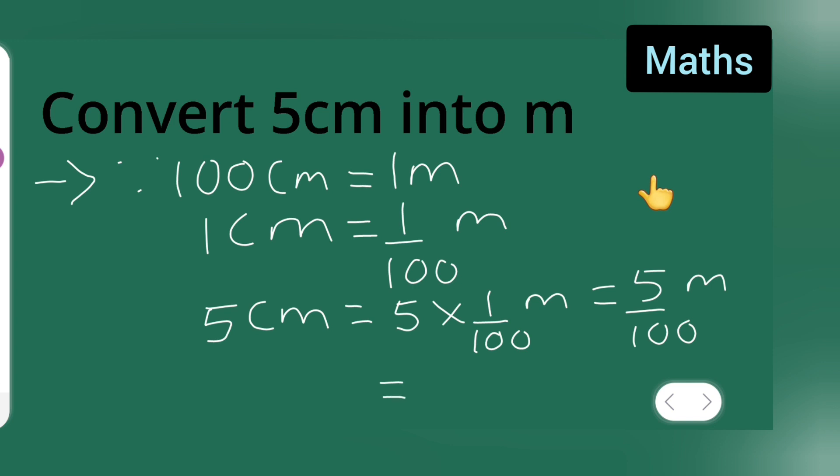Now that will be equal to - 5 upon 100 will be equal to, now take the decimal point - so basically your 5 centimeter will be equal to 0.05. You can see 0, after this you'll have to write this. Therefore you can say that 5 centimeter is equal to 0.05 meter.